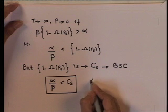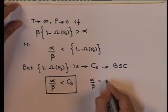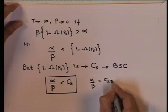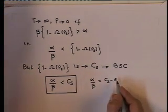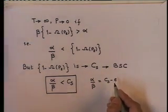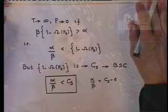Therefore, we conclude that the probability of choosing another vertex s_2 within a distance of beta t P_e from s_1 will tend to 0 if alpha by beta is less than channel capacity C_s. Hence, the probability of choosing two sequences randomly within a distance of beta t P_e approaches 0 as t tends to infinity, provided alpha by beta is less than C_s, and in this case we have error free communication. We can choose alpha by beta equal to C_s minus epsilon, where epsilon is arbitrarily small. We have thus verified Shannon's second theorem of error free communication for a binary symmetric channel.